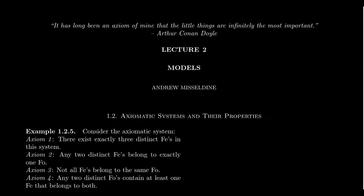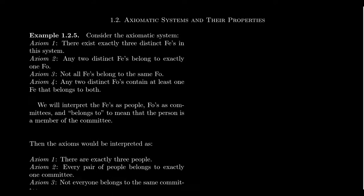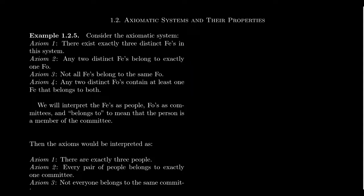What I want to talk about in this video is: what is a model? What we have here are the four axioms of the fee-foe system, the logical system introduced in the second video of lecture one. We have undefined terms — fees and foes — with a relationship called belonging. Axiom one: there exists exactly three fees. Axiom two: any two distinct fees belong to exactly one foe. Axiom three: not all fees belong to the same foe. Axiom four: any two distinct foes contain at least one fee that belongs to both. In lecture one, we proved four theorems about fee-foe theory.